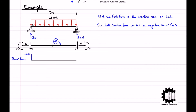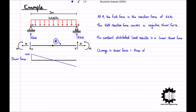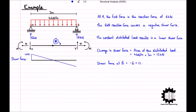Moving along the bar from left to right, we only have a uniformly distributed load — a constant distributed load. From our table, a constant distributed load means the shear force will be linear, and the change in shear force equals the area of the distributed load. As the distributed load acts downwards, which is positive on the left-hand side, the shear force will increase. The change in shear from A to B is 4 kN/m × 3 m = 12 kN, so at point B the shear force equals negative 6 plus 12, which is 6 kN.